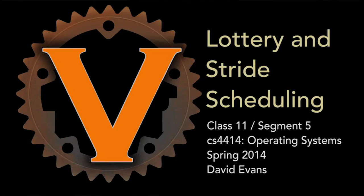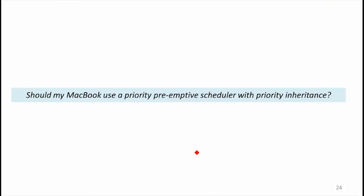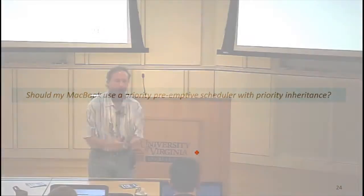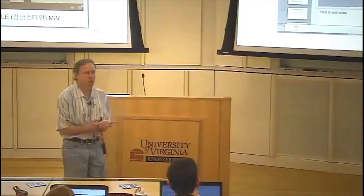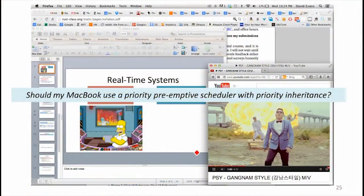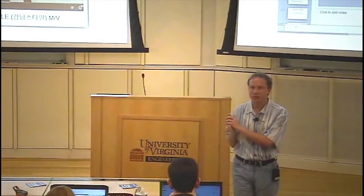Is this the right scheduling algorithm for my Mac? How do we decide if something's the right scheduling algorithm for some computing system? We've got to think about what people are doing with it and what our goals are. If what we're doing with a Mac is running things like typical users do, you're running processes like this. Do you want preemptive priority scheduling or do you want something else?